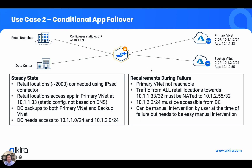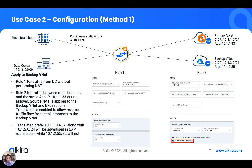First, this policy will be applied on the backup VNet. Rule one ensures that for all traffic between the backup VNet and the data center, we don't do anything to that traffic — this is a failure scenario when the primary VNet is down. For rule two, we match all traffic from 10.1.2.55 to anything and source NAT it to a static IP of 10.1.1.33. By checking bidirectional translation, it will allow all traffic sourcing from the retail branches going to the backup VNet to also have NAT applied in the reverse direction — that is, 10.1.1.33 being NATed to 10.1.2.55.